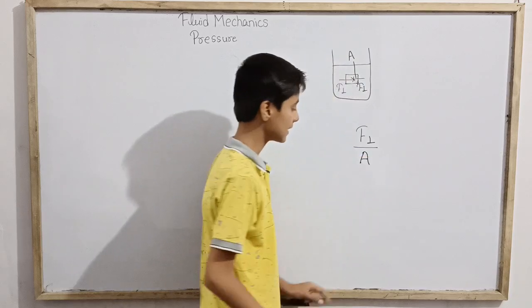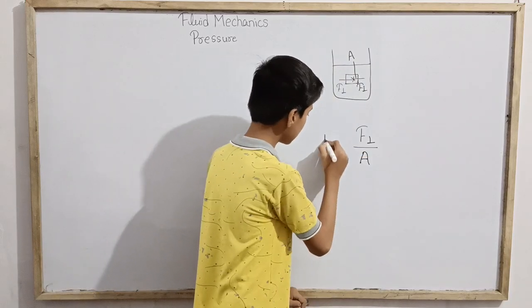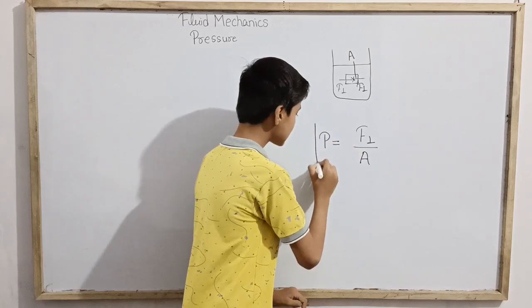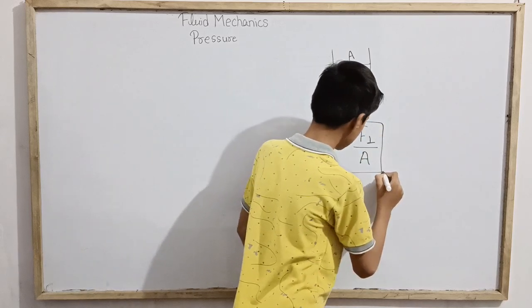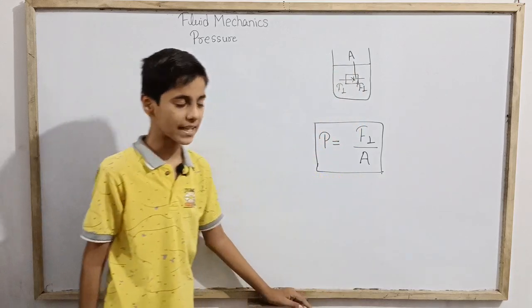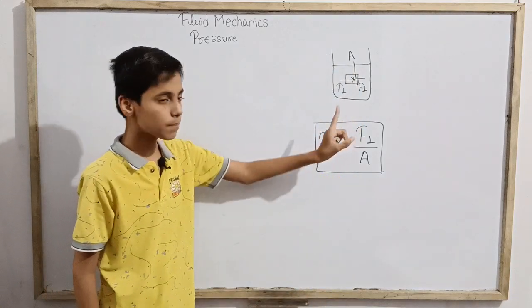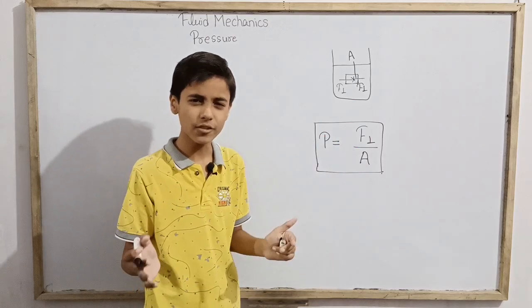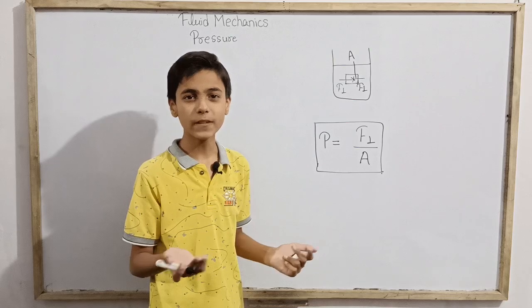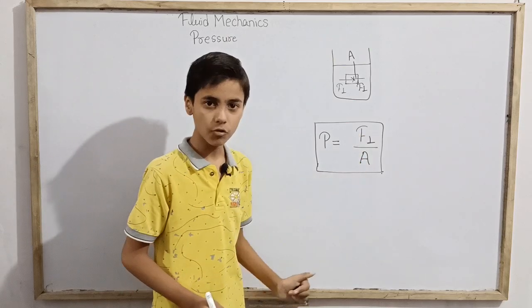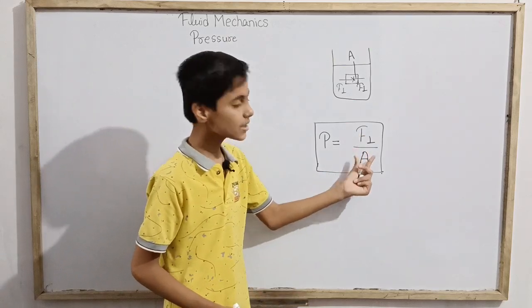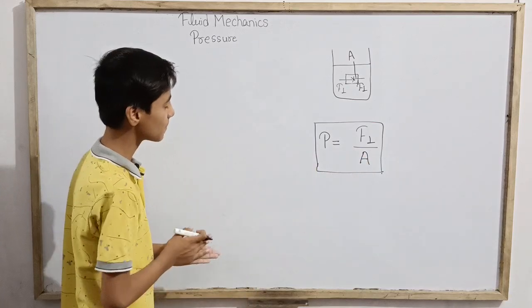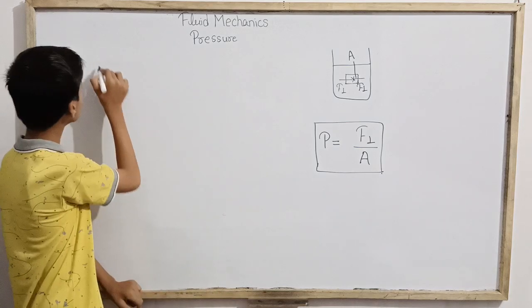If we divide this force by the cross-sectional area on which it is getting exerted, we get a physical quantity which we call pressure. This is what we define as pressure: the ratio of the normal force exerted on a body to the surface area or cross-sectional area on which it is getting exerted.